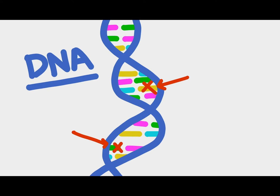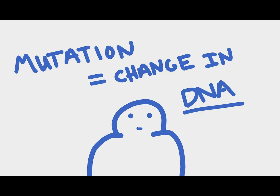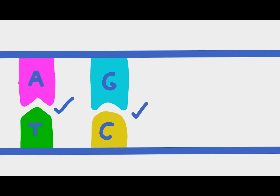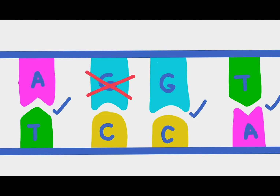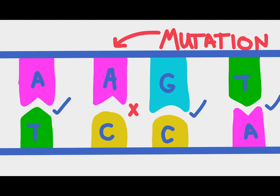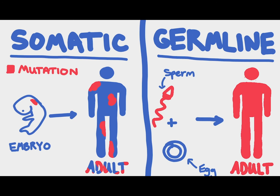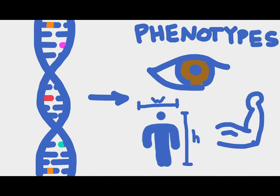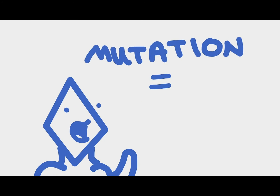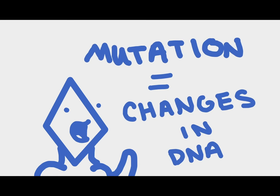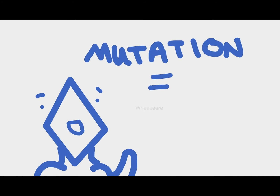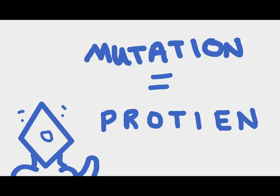You've all heard of a mutation, and the classic definition is that a mutation is a change in the DNA. They're defined as somatic mutations or germline mutations, and typically these changes are associated with a phenotype, or physical manifestation.